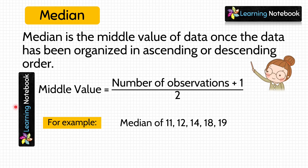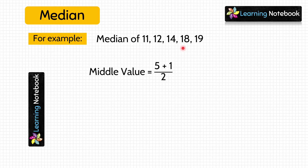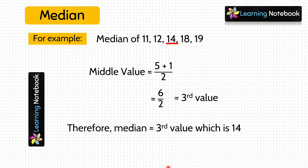This data is already organized in ascending order. To find the median, we find the middle value: number of observations plus 1 divided by 2. Here there are 5 observations, so 5 plus 1 divided by 2 equals 3. So the middle value is the 3rd value in the data, which is 14. Therefore the median is 14.